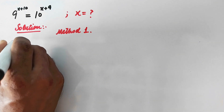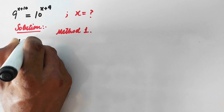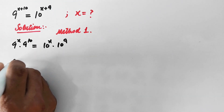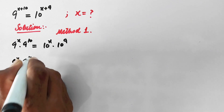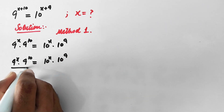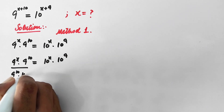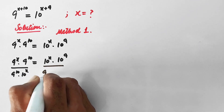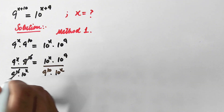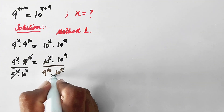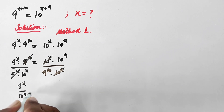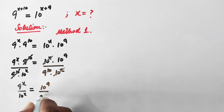In the first step, we can write 9 raised to power x times 9 raised to power 10 is equal to 10 raised to power x times 10 raised to power 9. Now we will divide both sides by 9 raised to the power 10 times 10 raised to the power x. This 9 raised to the power 10 will cancel, and 10 raised to the power x will cancel, so we are left with 9 raised to the power x over 10 raised to the power x is equal to 10 raised to the power 9 over 9 raised to the power 10.